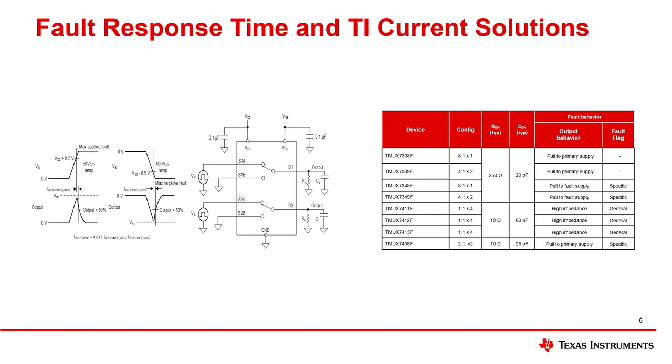Another important characteristic in TI fault-protected multiplexers is the fault response time. The image above shows a fault response time, which measures the delay between the source voltage exceeding the supply voltage by 0.5 volts and the drain voltage falling to 50% of the maximum output voltage. The TMUX7436F has been measured to have an industry-leading fault response time of 110 nanoseconds. This is important because it decreases the likelihood of an overvoltage event damaging downstream components.